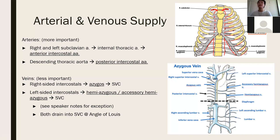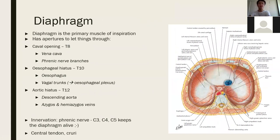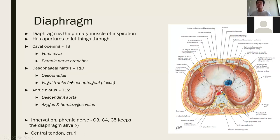The diaphragm is the primary muscle of inspiration. The key things to know for year one are the apertures. There are three: the caval opening at T8 — containing the vena cava and some phrenic nerve branches; the esophageal hiatus at T10 — containing the esophagus and vagal trunks (branches of the vagus nerve); and the aortic hiatus at T12 — containing the descending aorta, the azygous and hemiazygous veins, and the thoracic duct.